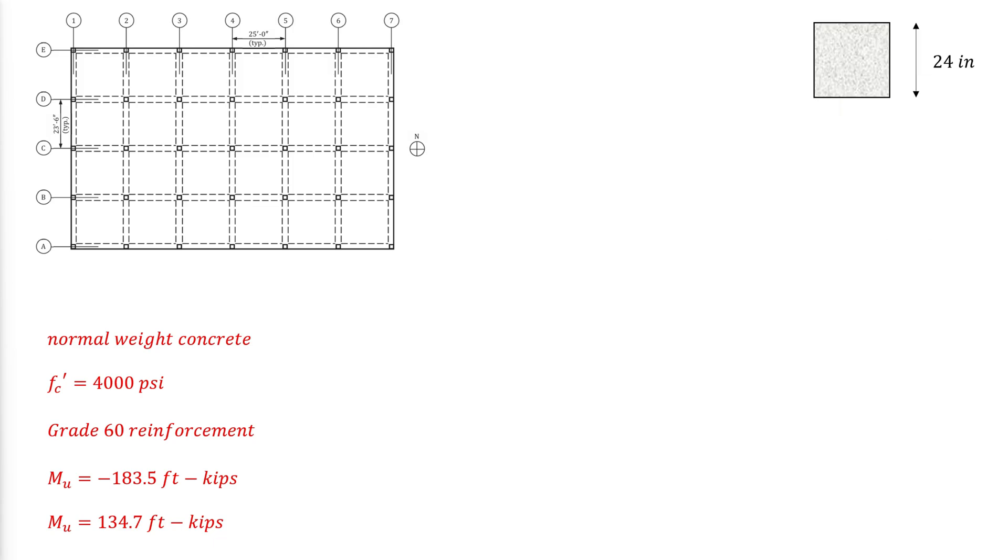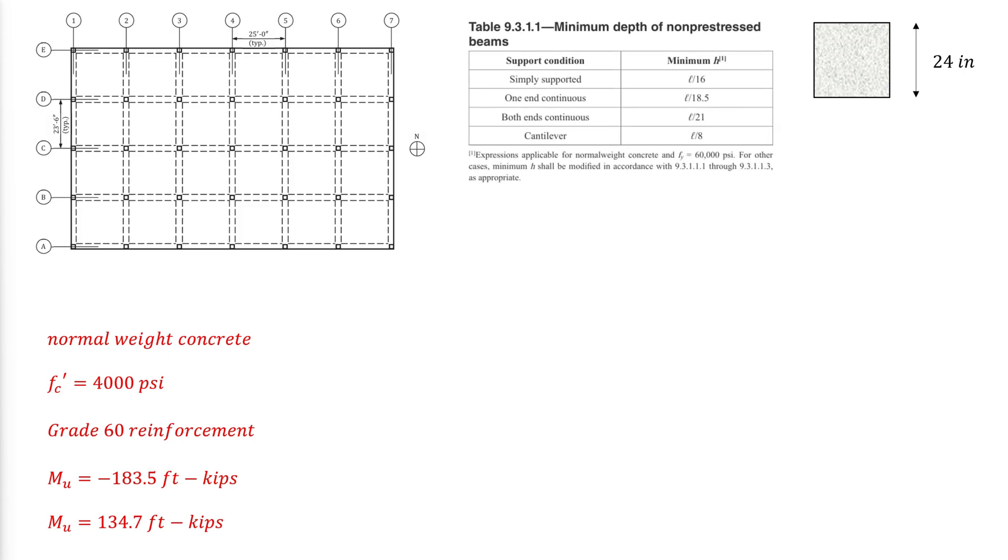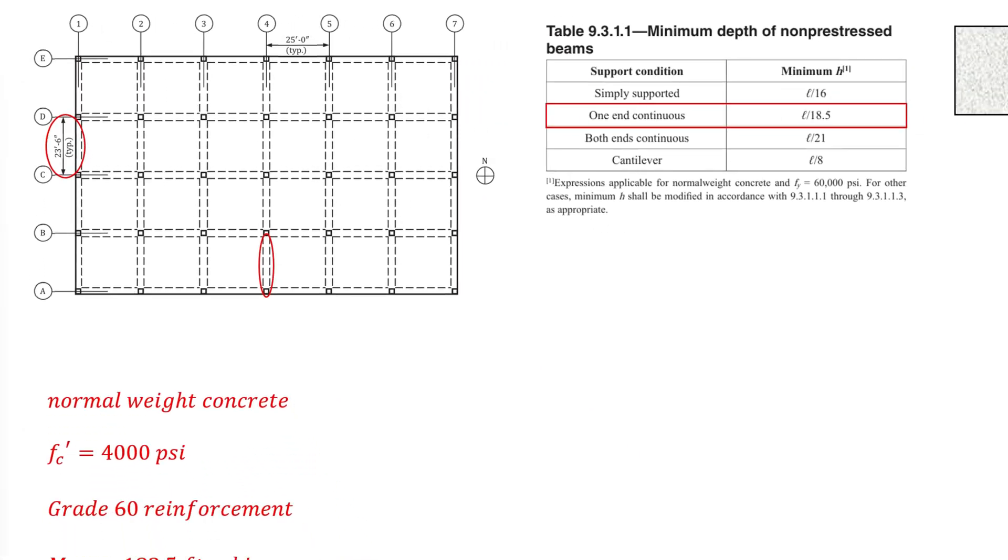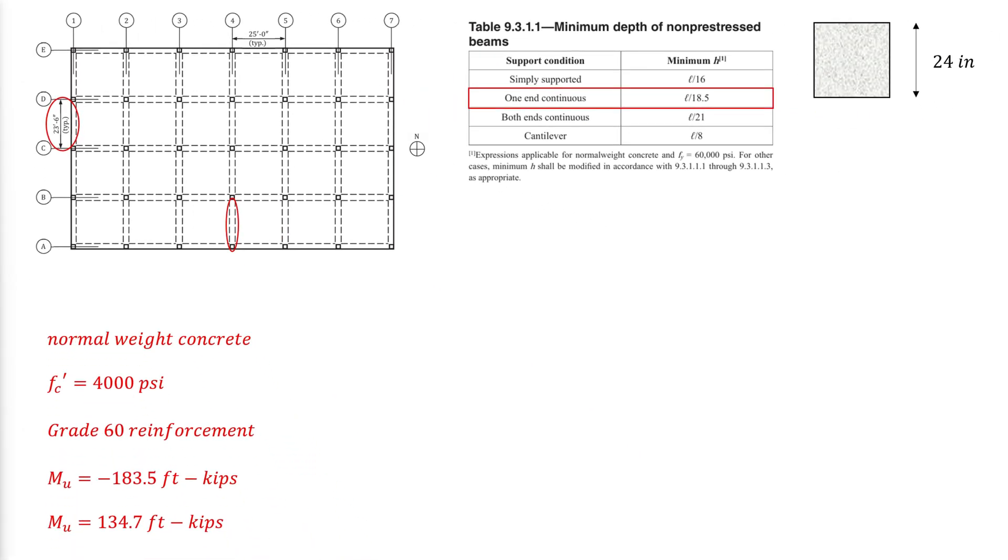The first step is to check whether the beam depth of 24 inches is adequate or not. For that we refer to the minimum depth requirements in ACI table 9.3.1.1. Because we are concerned with the end span beam, the relevant limit is L over 18.5. Thus, we take the length of the beam which is 23.5 feet divided by 18.5 which gives 16.2 inches, which is less than the available 24 inches.